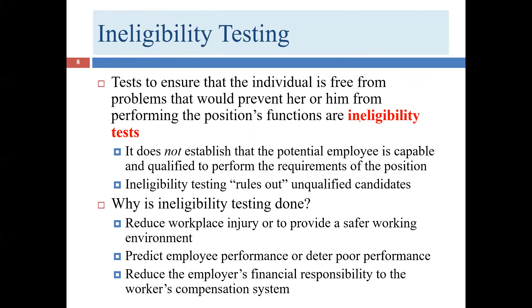If we have eligibility testing, we obviously also have ineligibility testing. This is designed to make sure somebody doesn't have a problem that's going to prevent their success — instead of ruling people in, which is what we do with eligibility testing, we're ruling people out. The fact that we don't rule a person out — meaning they pass certain tests — doesn't mean they're the best candidate for the job. It simply means they don't have a particular impediment that would have made their employment problematic.